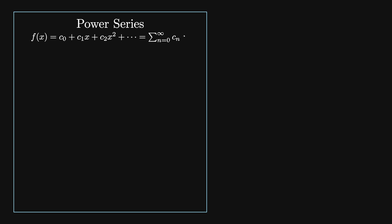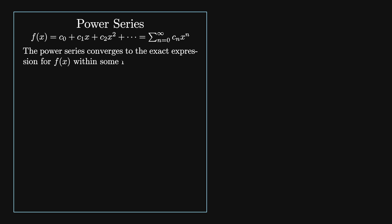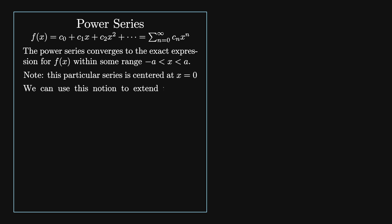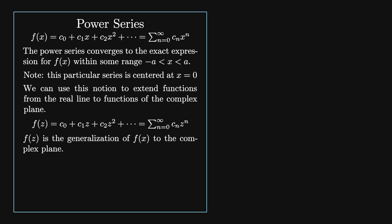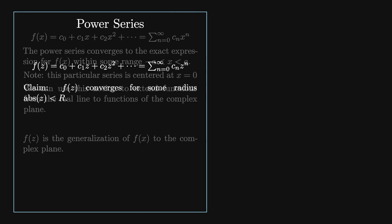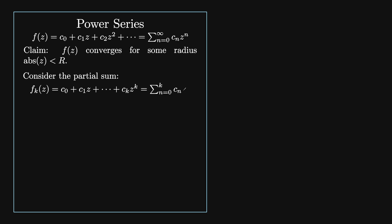Now that we understand how powers act on the complex plane, we can start defining more complex functions using power series. We're used to thinking of Taylor series as a way of describing real functions: f of x equals c0 plus c1·x plus c2·x squared, etc., equals the sum from n equals 0 to infinity of cn times x to the n. This converges in some range minus a less than x less than a. The series shown here is centered at the origin, but in general the series can be centered at any value. We can use the power series to extend functions from the real line to the complex plane: f of z equals the sum from n equals 0 to infinity of cn·z to the n. Let's consider the partial sum fk of z equals the sum from n equals 0 to k of cn·z to the n, and we're trying to evaluate f at some complex point a.